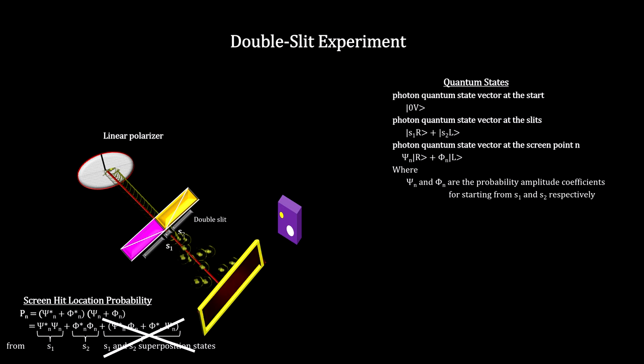they cancel out when we calculate the probability distribution. We are left with a probability distribution that only contains terms for the two slits, giving us the blob instead of the interference pattern.